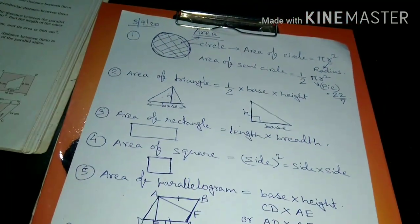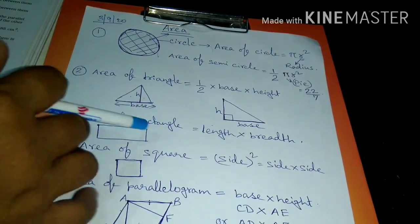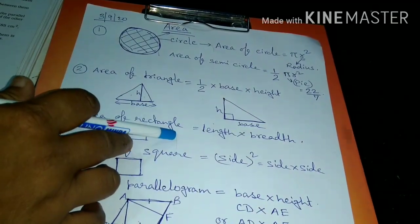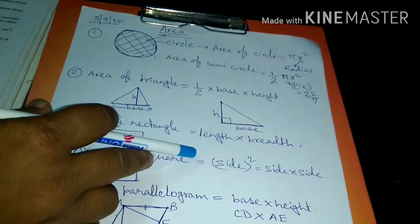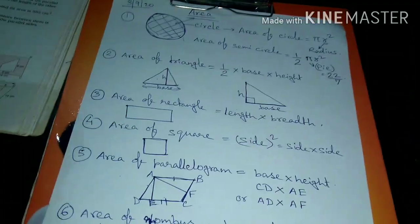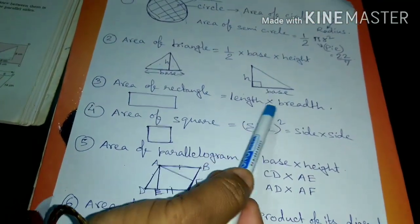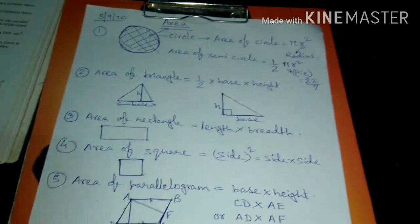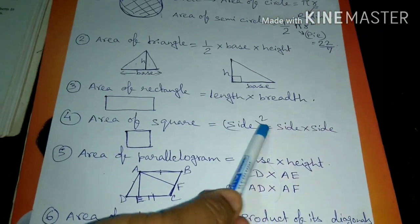Next, area of rectangle. You all have studied this in your previous classes, in 6th and 7th standard. Area of rectangle is length into breadth. Area of square is side squared, that means side into side.